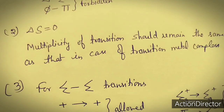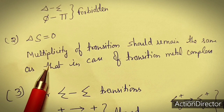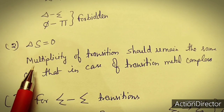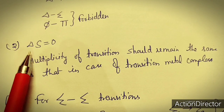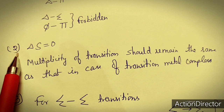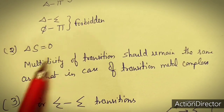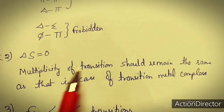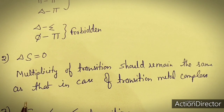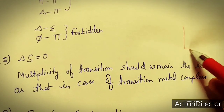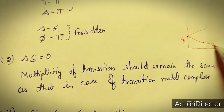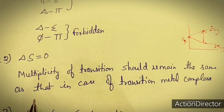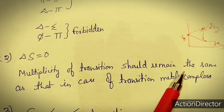The spin selection rule states ΔS = 0, so transitions must occur between states of the same multiplicity — for example, doublet to doublet — just as we saw in transition metal complexes, where transitions take place between same-multiplicity terms.